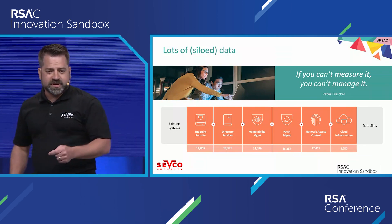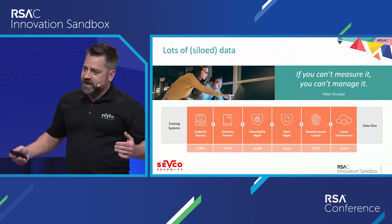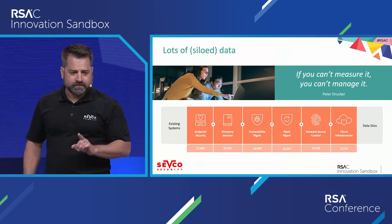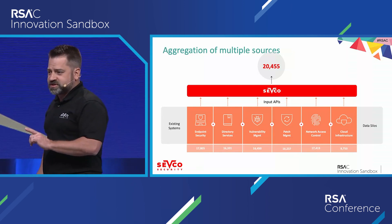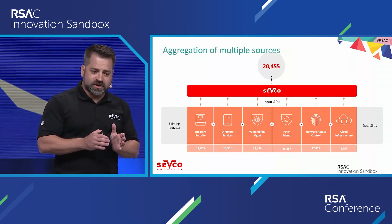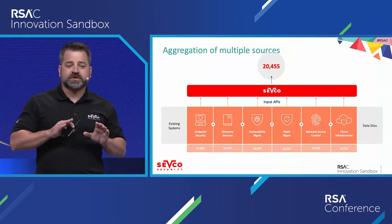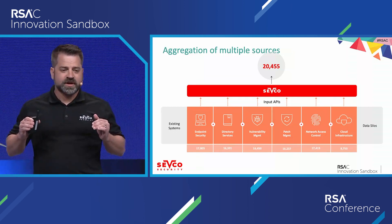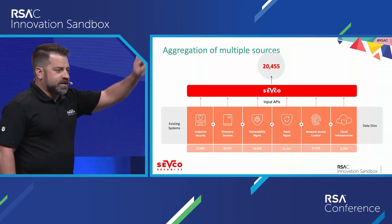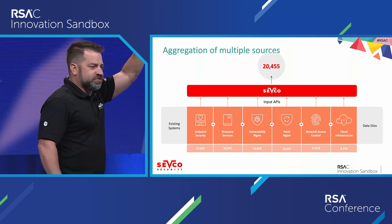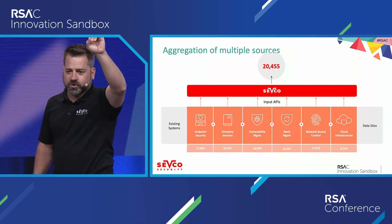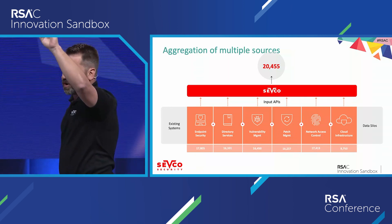In order to get a complete asset inventory, you've got to stitch together all those different technologies into a single view. At Sevco, we connect to your existing sources of inventory via APIs. We send those through a correlation engine to understand the single view of devices across all those different inventories and give you your first-ever complete inventory. If you are not aggregating inventory from multiple sources, you do not have a complete inventory.